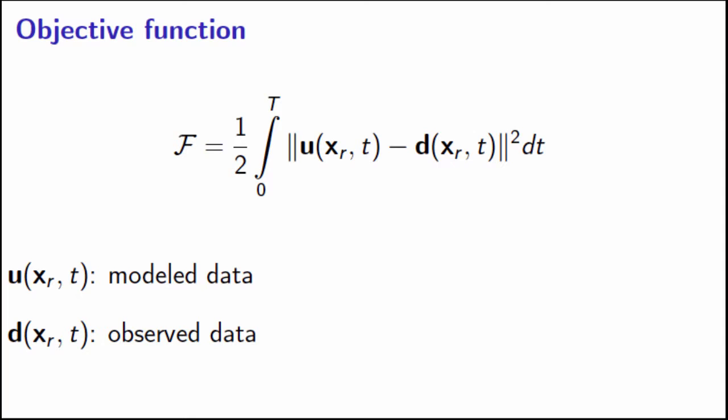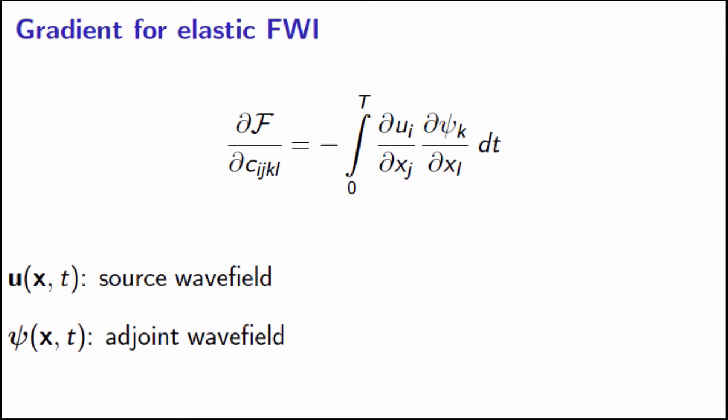I'll just present the gradient expression, which is the zero-lag cross correlation of the source and of spatial derivatives of the source and the adjoint wave fields. Once we have the gradient with respect to the stiffness coefficients, we can obtain the gradients with respect to the model parameters of our choice.